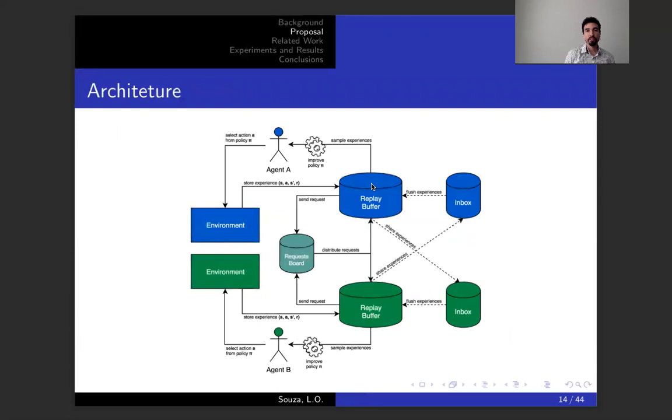Our architecture is this where we have two agents. Each one is learning in the same environment. It's shown here as two environments as each one perceives its own environment, but they can be similar or shared. Agent one selects an action A from policy pi. The environment returns the transition to the next state and the reward. You have this experience, which is given by state, action, next state and reward. The agent stores that experience in the replay buffer. The agent samples experience at the learning stage to improve its policy pi. This is the common loop.